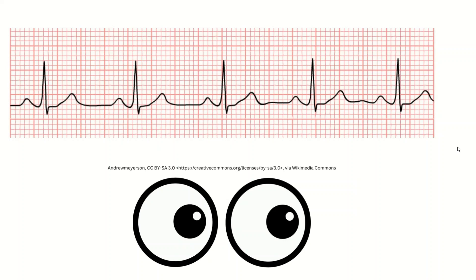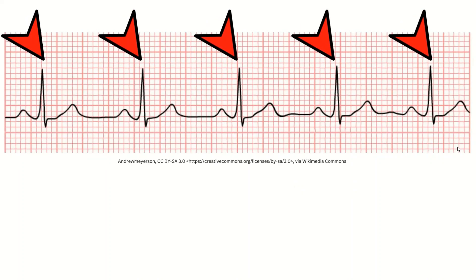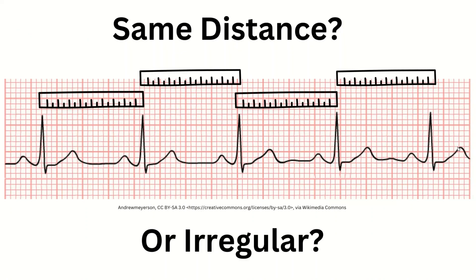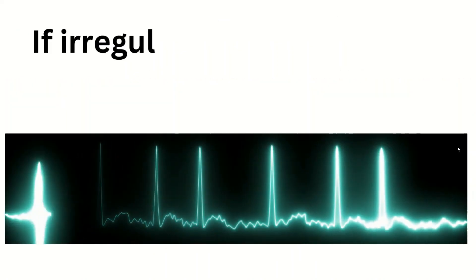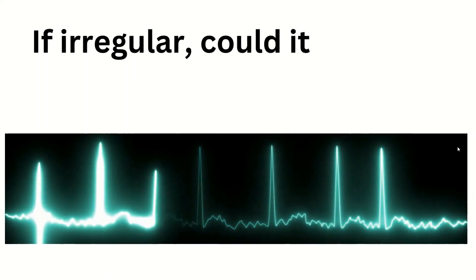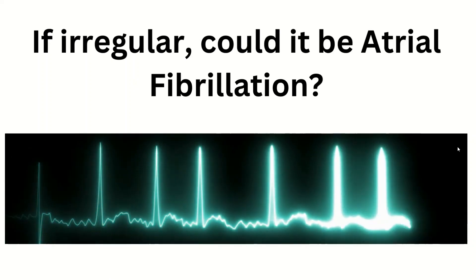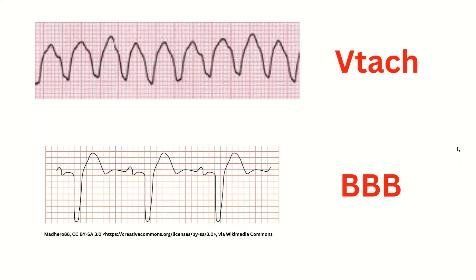My eyes jump to the QRS complex, specifically the R wave. Are the R waves the same distance from each other, or is the distance irregular? And if it is irregular, could it be atrial fibrillation? Then I look at the QRS — is the QRS wide? And if so, is it VTAC, a bundle branch block, or is it a paced rhythm?